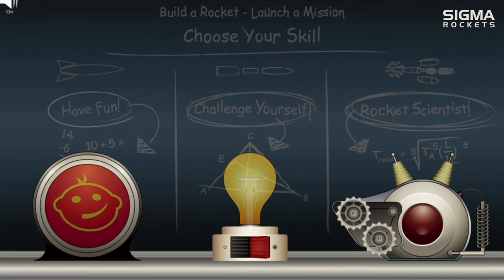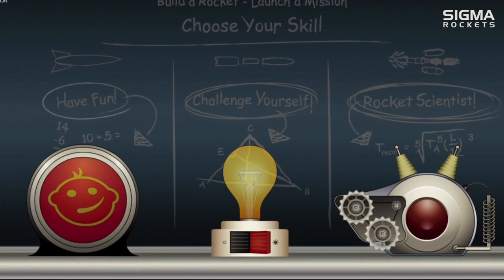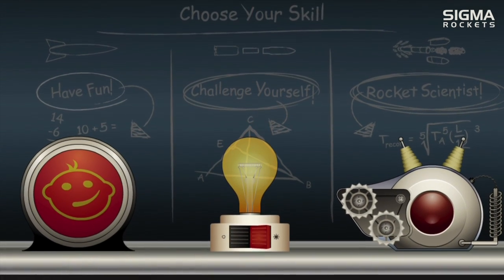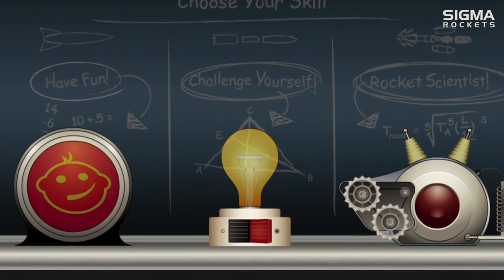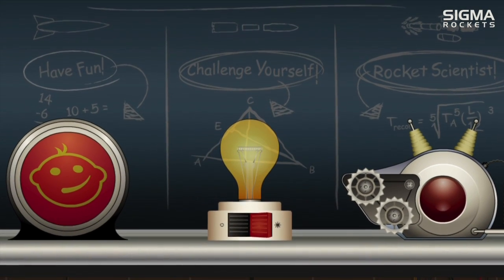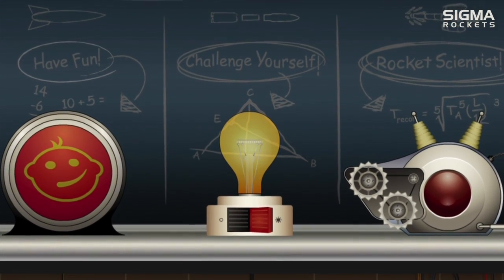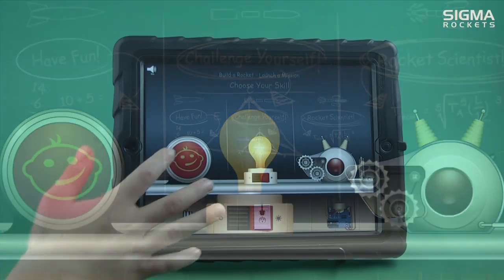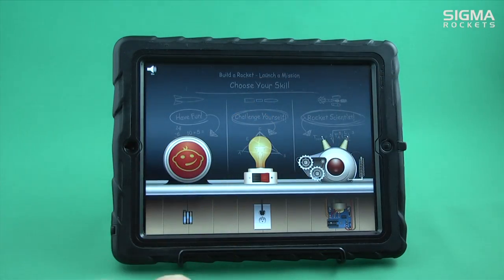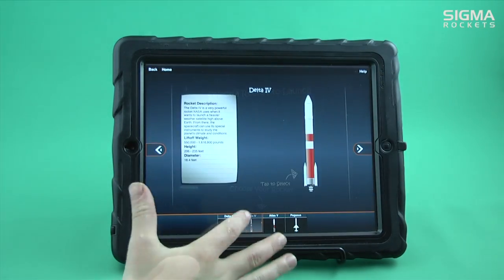First, select the skill level to be attempted. The options are Have Fun, Challenge Yourself, and Rocket Scientist. We'll select the level called Have Fun.